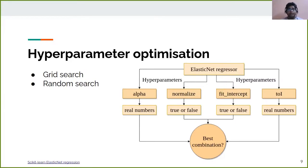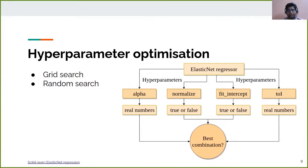In grid search, we define discrete values of each hyperparameter. For example, alpha takes a positive real number — we can define four different values between 1 and 10, like 1, 3, 7, and 10. For normalize and fit intercept, we specify true and false. For TOL, we can specify values such as 0.1, 0.3, 0.5, and 1. The algorithm creates all-versus-all combinations of these discrete values. For each combination, it tries to find an accuracy. The combination which gives the best accuracy represents the best hyperparameters for a particular dataset.